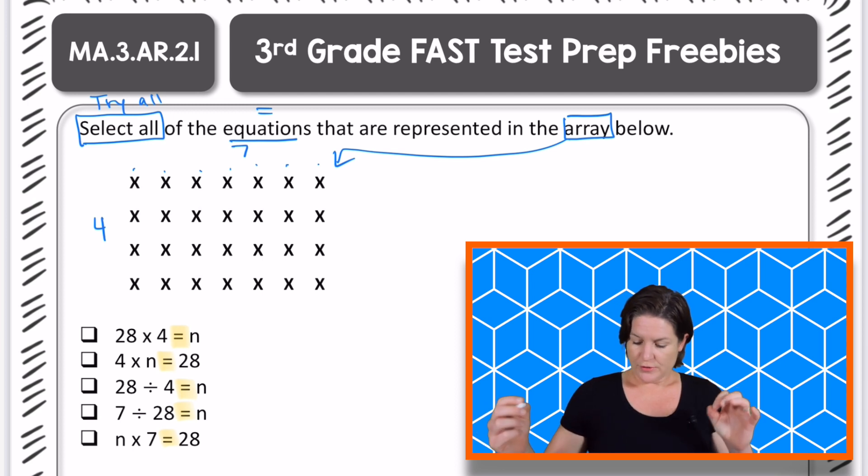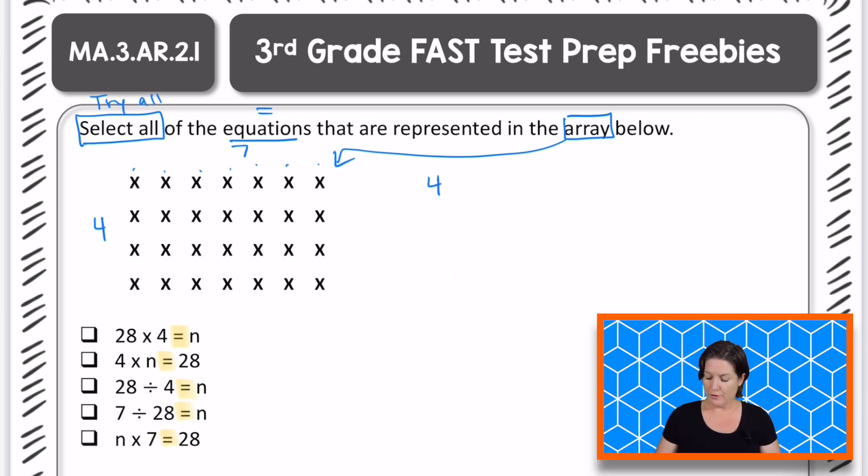Okay. So I'm going to create all the equations that I know that this could be, and then go over and select all of the equations. So I know that it could be four rows of seven, which equals a total of 28. Very good. We can also flip flop those factors and use the commutative property, which would be seven times four equals 28. Awesome.